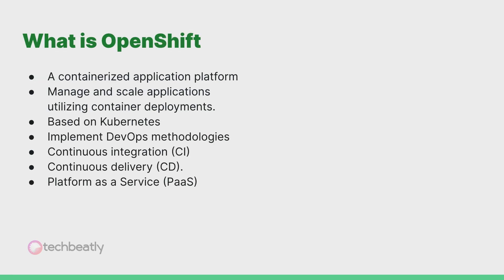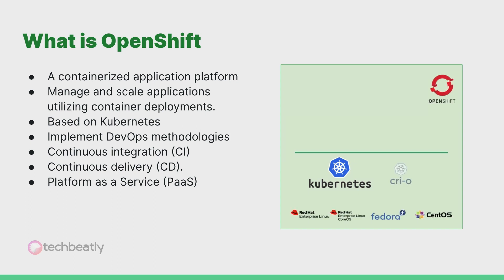So what is OpenShift? OpenShift is a feature-full containerized application platform with the ability to manage and scale applications utilizing container deployments. OpenShift is based on the same Kubernetes we are talking about every day, but extends the platform with features to handle the entire application lifecycle. OpenShift provides predefined application environments with a lot of features which will enable the organization to implement DevOps methodologies and tools, including continuous integration and continuous delivery. In general, OpenShift will come under the platform as a service, or PaaS, category.